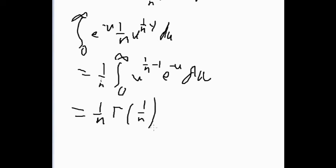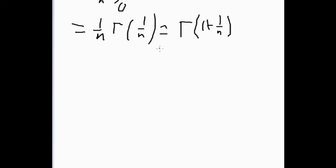So this is just the same as the gamma integral, but with n equals 1 over n, so it's just 1 over n gamma of 1 over n. And then using the functional equation, it's just gamma of 1 plus 1 over n. Or you could also write it as 1 over n factorial.